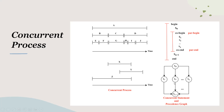So if we look at the graphical precedence graph, we also have sequentially executed processes. First of all, S0 is executed. This process is taken from here. Then Sn plus 1, which is executed at the end, is taken from here. So inside the body, if there is no co-begin and no co-end, then the processes S1, S2, and so on Sn are executed in parallel.